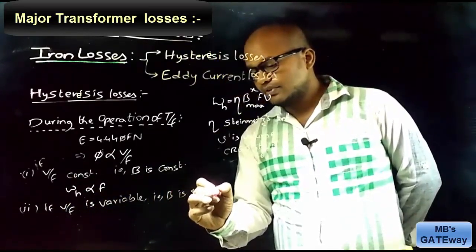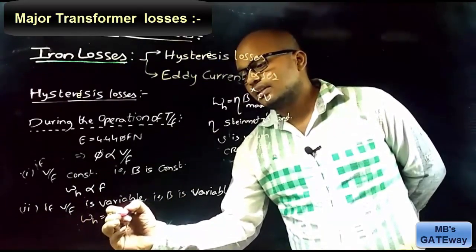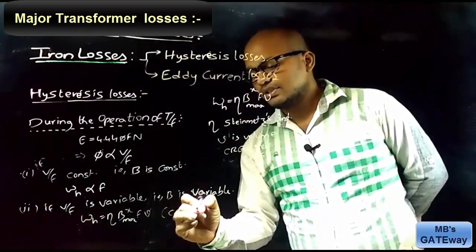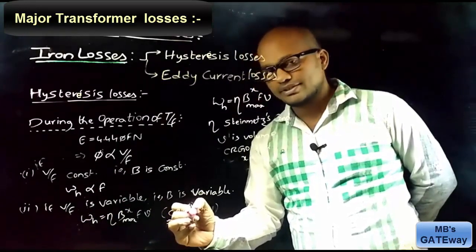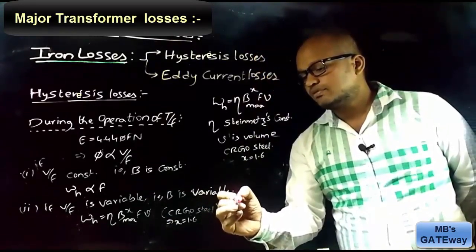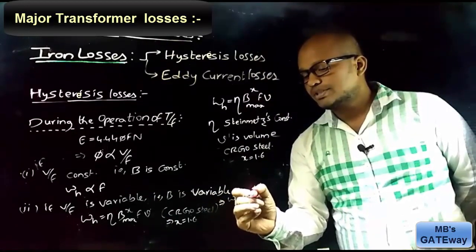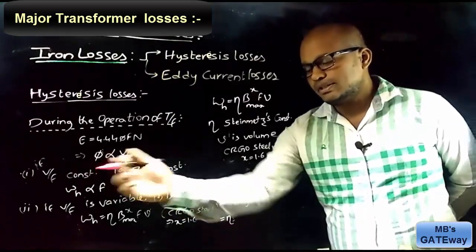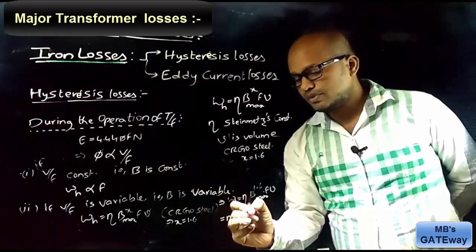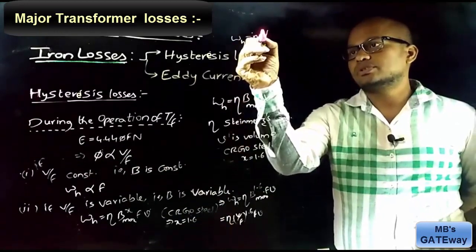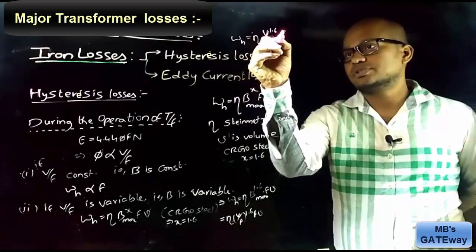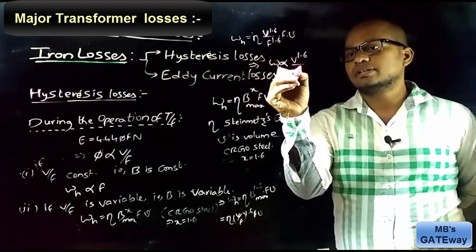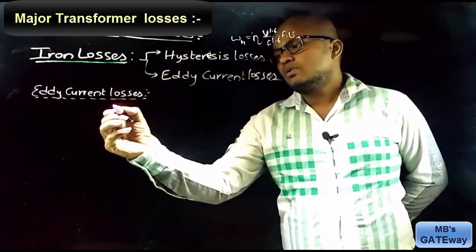If V/F is variable, then from WH = η · Bmax^x · F · V, for CRGO steel with x = 1.6, substituting B = V/F: WH = η · (V/F)^1.6 · F · V = η · V^1.6 / F^1.6 · F · V, which gives hysteresis losses directly proportional to V^1.6 / F^0.6.